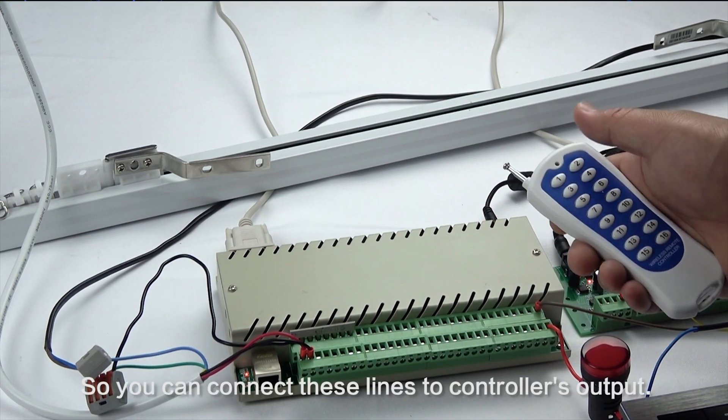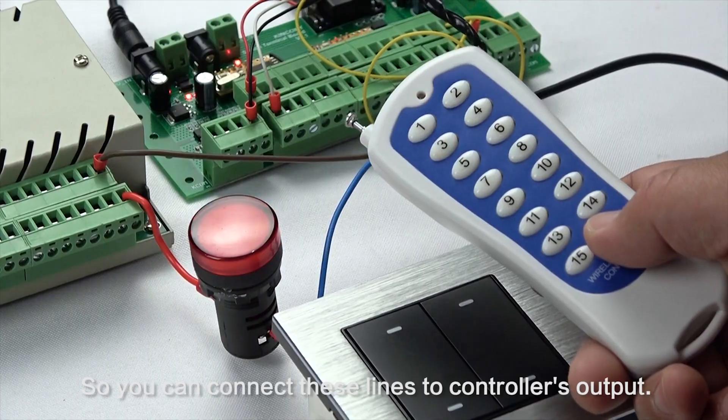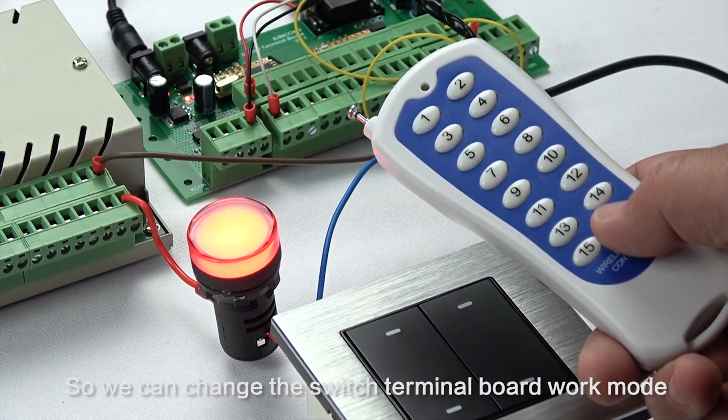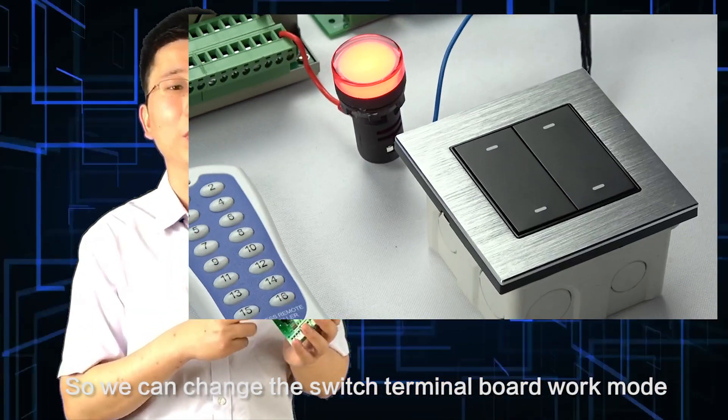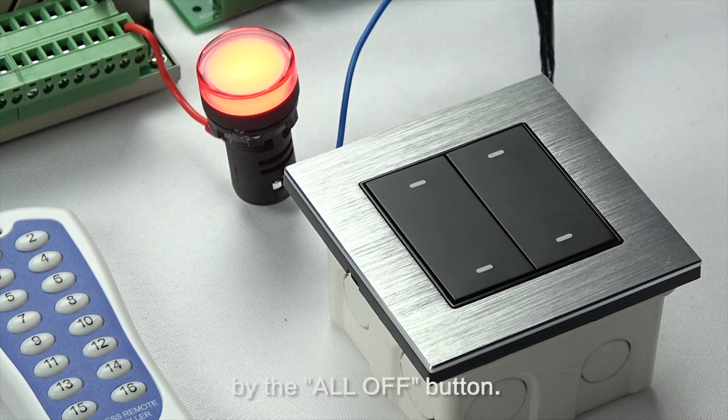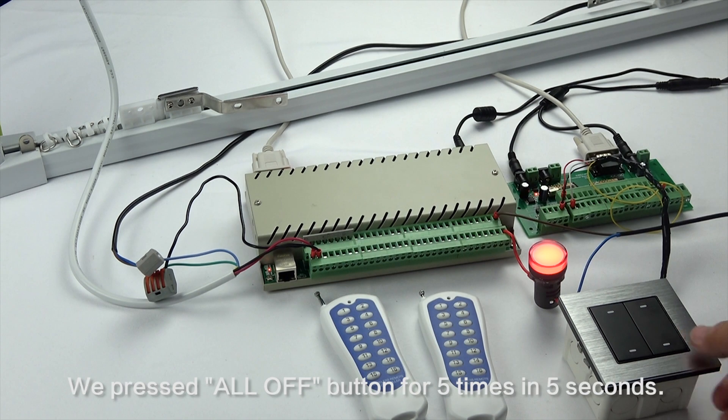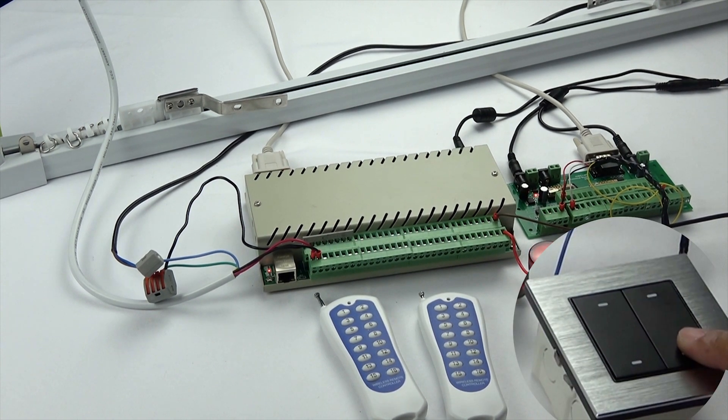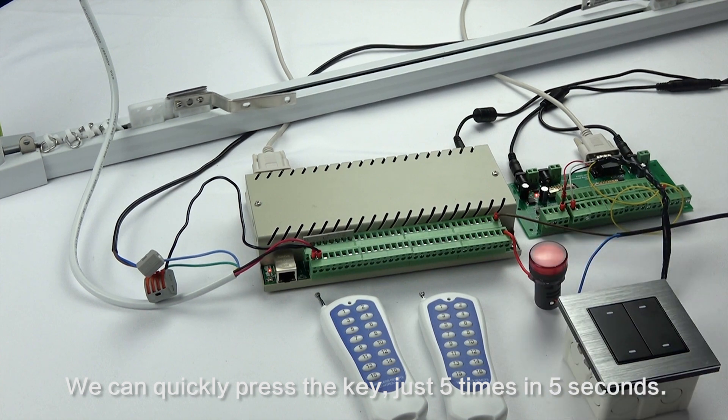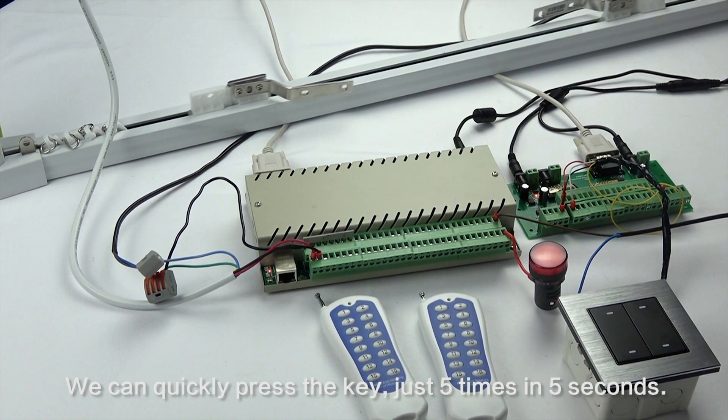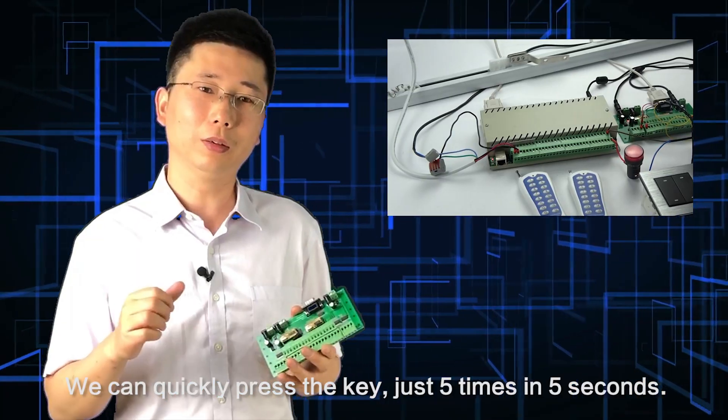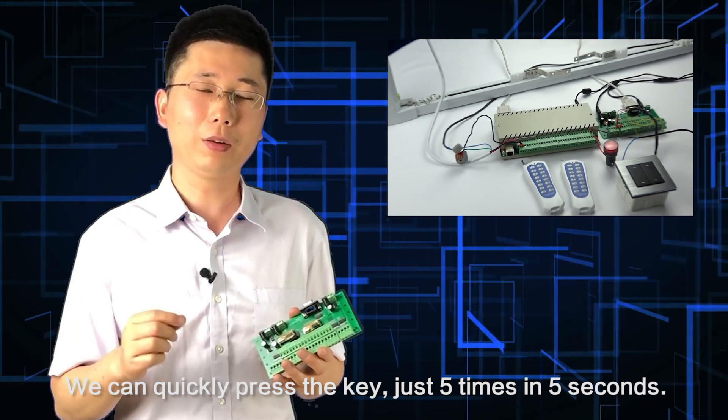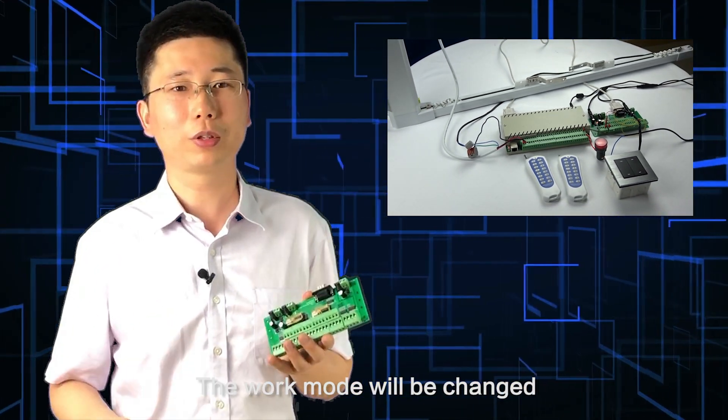You can connect these lines to the control output. We can change the switch terminal board work mode using the all-off button. Press the all-off button 5 times in 5 seconds, and the work mode will be changed.